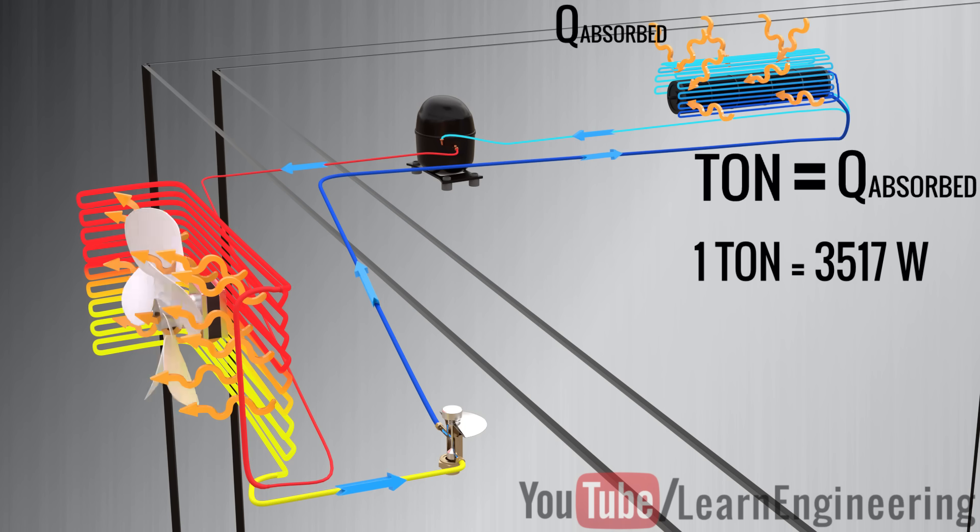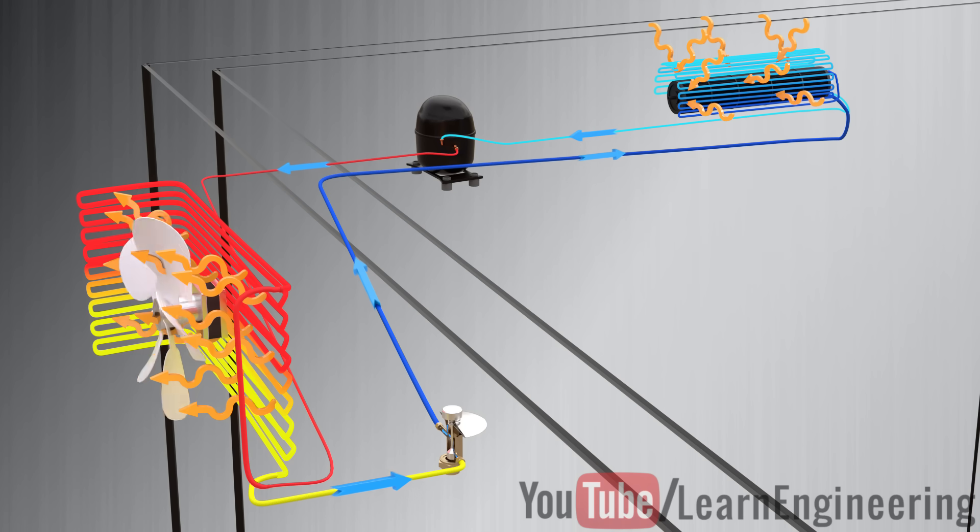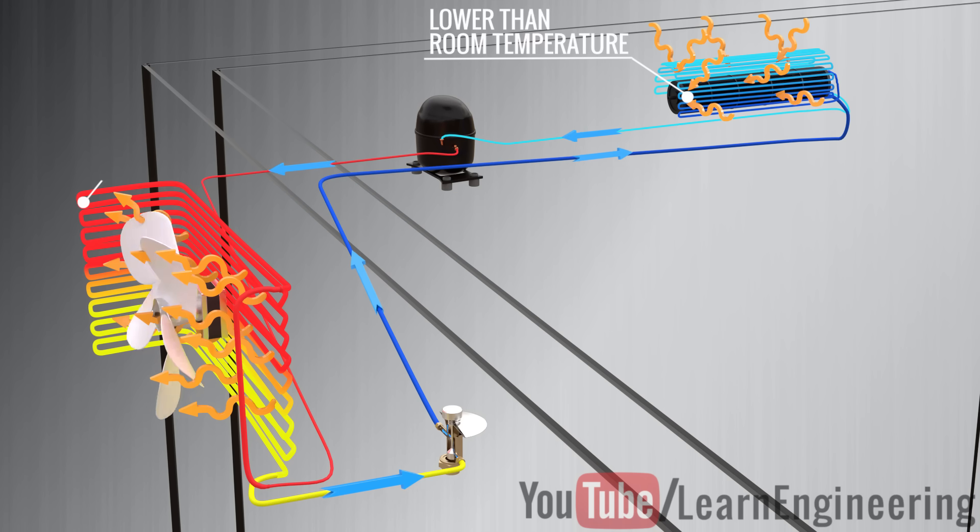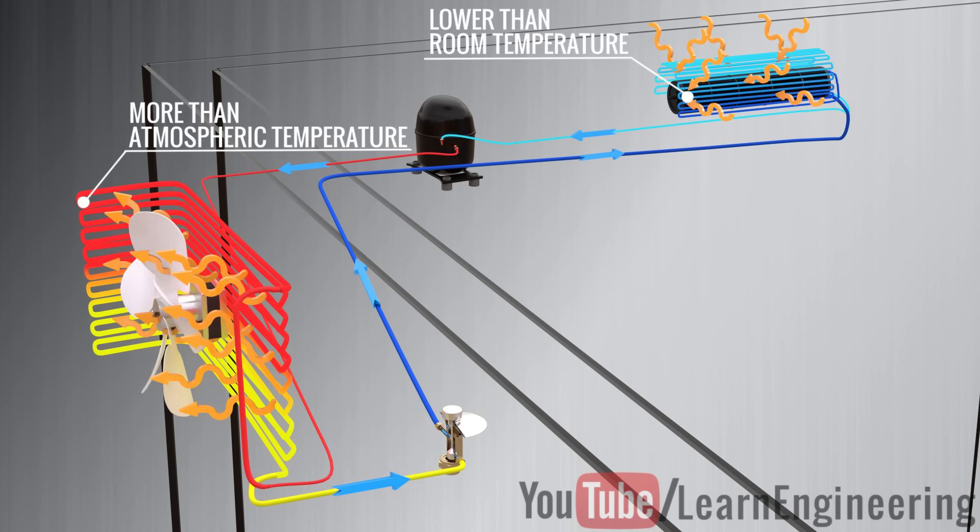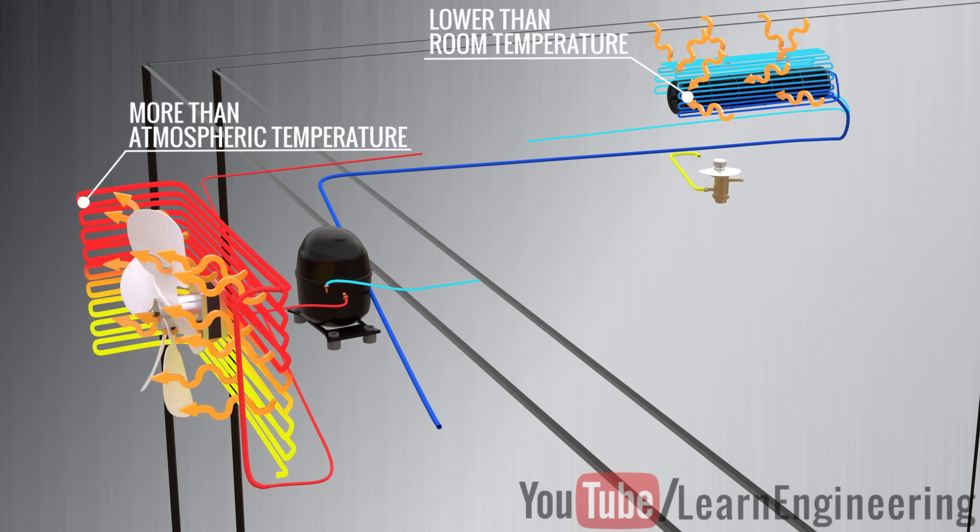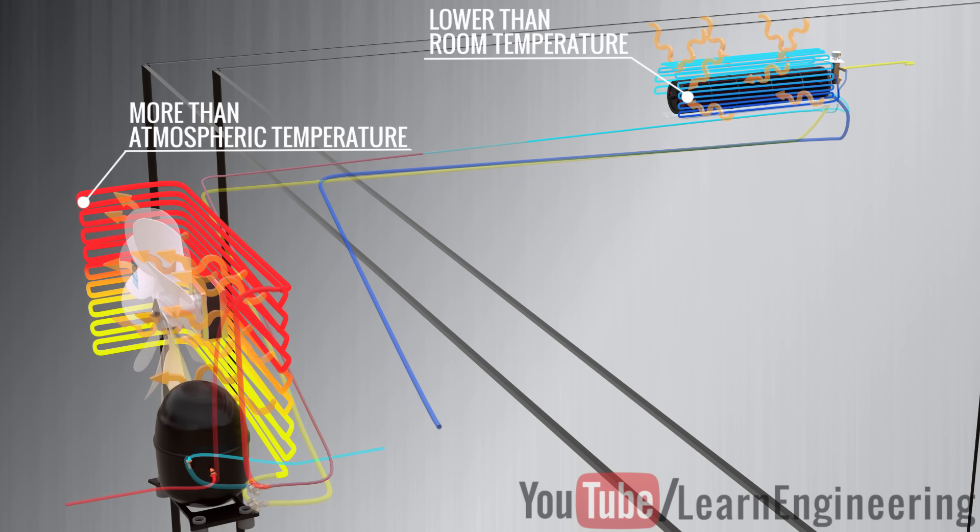In this way, we have achieved the fundamental rule of an air conditioner. The temperature is lower than the room temperature in the coil inside the room, and the temperature is more than the atmospheric temperature in the coil outside the room. In an actual air conditioner, the compressor sits near to the condenser, and the expansion valve sits near to the evaporator.